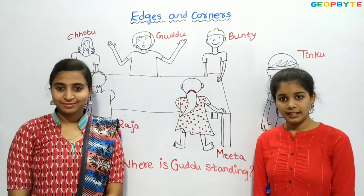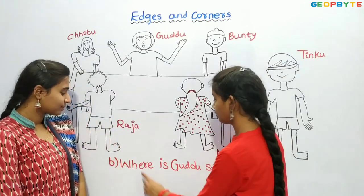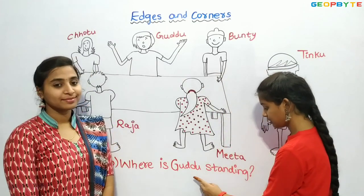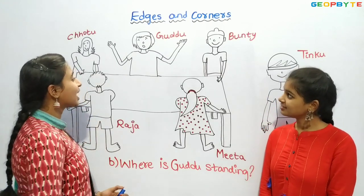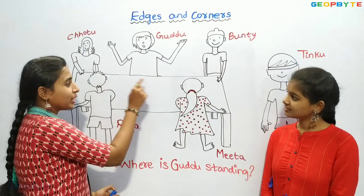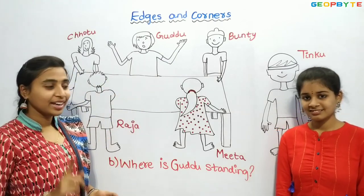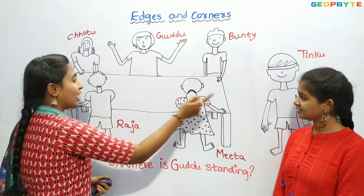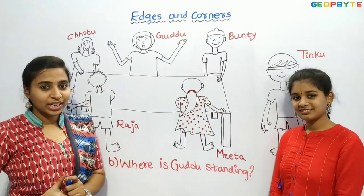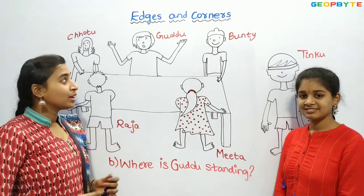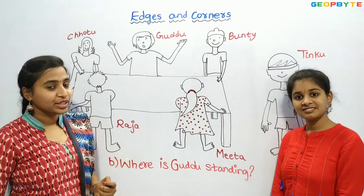Now let us see the next question: Where is Guddu standing? Guddu is standing in the middle of the edge of the table. We have 1, 2, 3, 4 — four edges in a table. Guddu is standing in the middle of the edge of the table.